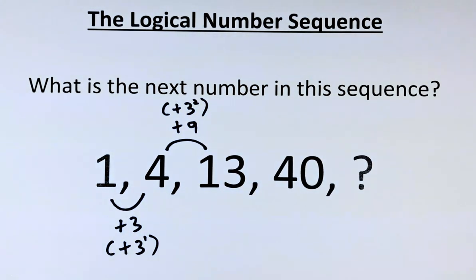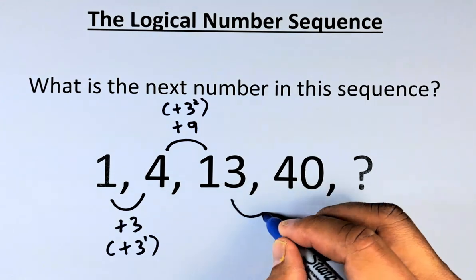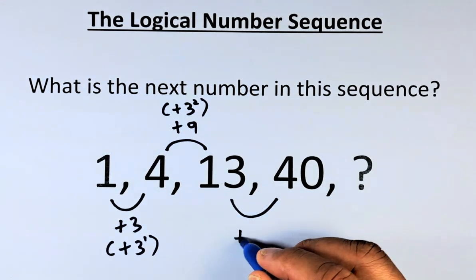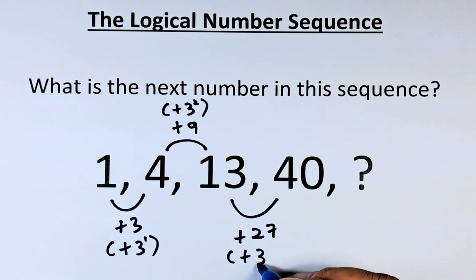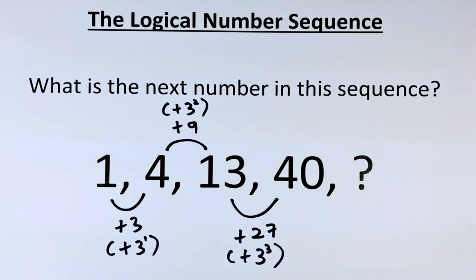And then from 13 to 40, if you can see the pattern now, it's going to be plus 27. It can also be written as plus 3 to the power of 3, or 3 cubed.